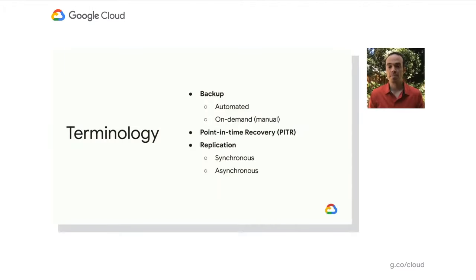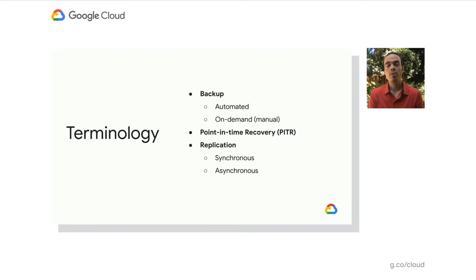As we talk about high availability and disaster recovery, it's important to start with some terminology. Backups are independent copies of the data set that aren't in the database serving path. We think about the database's data set — the data it's working on right now — and we make a copy of it, an independent copy sent to some other storage system, so that backup is no longer in the serving path.